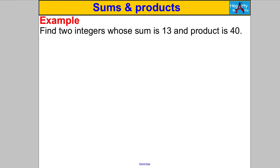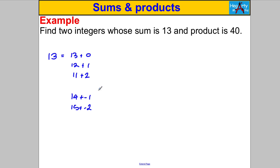Find two integers whose sum is 13 and product is 40. If you started by thinking of numbers that sum to 13, you're going to be in a bad place. Loads of things sum to 13: 13 add 0, 12 add 1, 11 add 2 — and even 14 add negative 1, 15 add negative 2. There are infinitely many combinations of numbers that sum to 13, so starting that way means you'll be there all day.